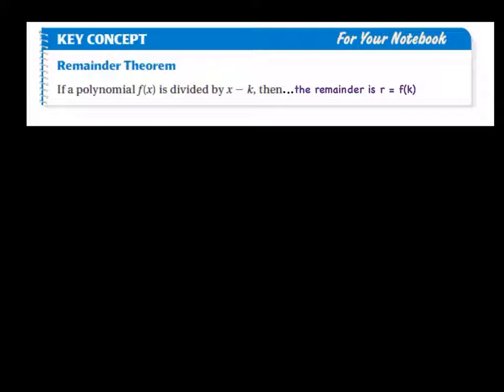And that's all your remainder theorem is saying too. I just told you that that last place value is the remainder, and that's what this is saying too. When you have a polynomial f of x and it's divided by x minus or plus a number, then the remainder is r equals f of k. So that's just telling you that the remainder also equals that value that you plugged in, they're both the same thing.